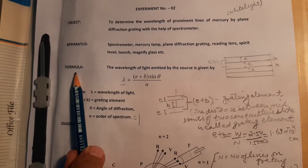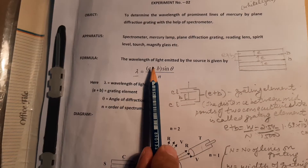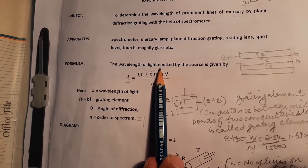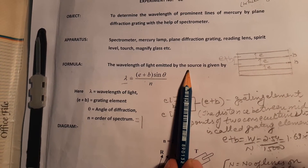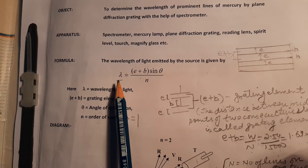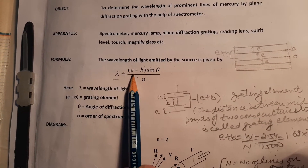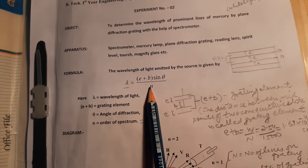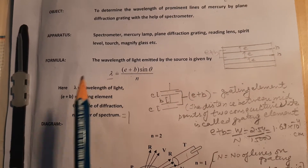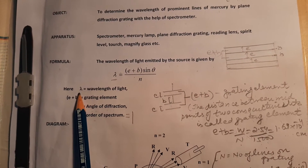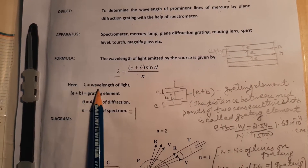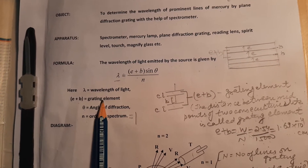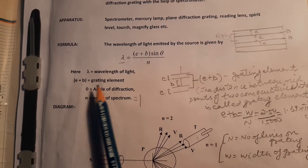The formula used: the wavelength of the light emitted by the source is given by lambda equals (E + V) sin theta upon N, where lambda is called the wavelength of the light and E plus V is called the grating element.